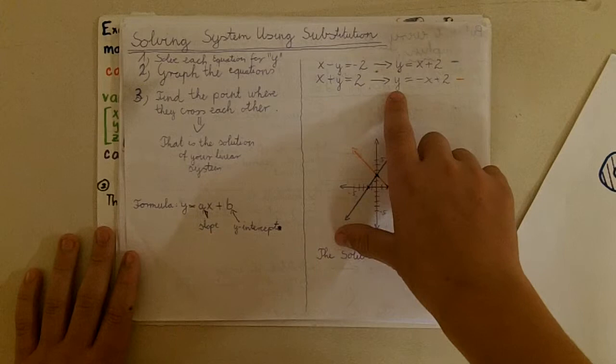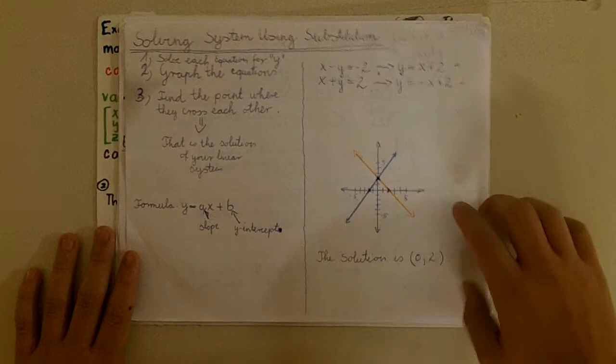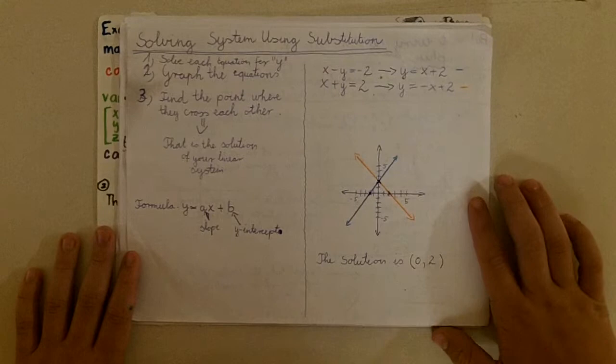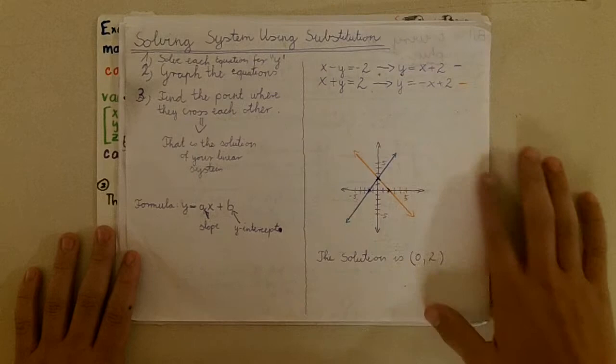Then you're going to graph them. As you can see, these are the two lines — this one's orange and this one's blue. You're going to find the point where they intersect each other, which happens to be the y-intercept at 0, 2. So that's going to be your solution: (0, 2).